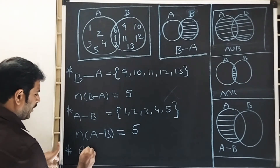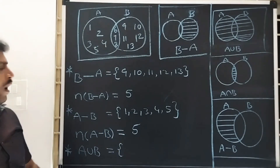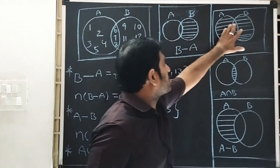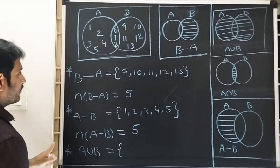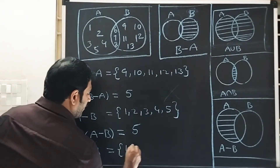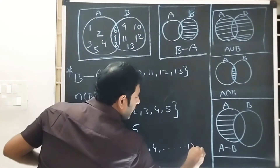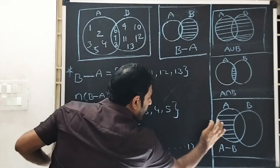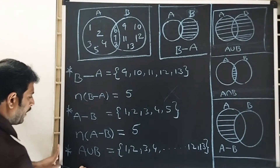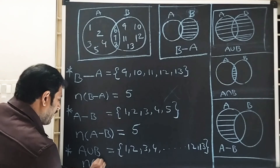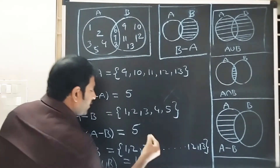Now A union B — collecting all elements and total shade. The total shaded elements are 1, 2, 3, 4 ... 12, 13. Number of elements is equal to 13.